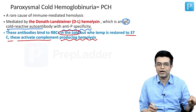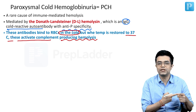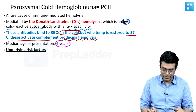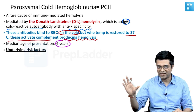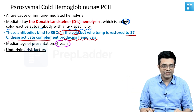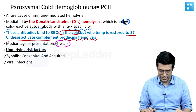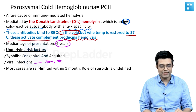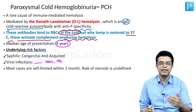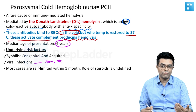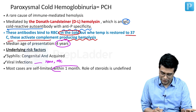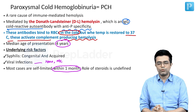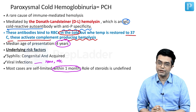The binding to RBCs occurs in the cold environment. Median age of presentation is about four years, with a range of one year to 85 years — that is how wide the range is. Underlying factors include syphilis (both congenital and acquired) and viral infections, which are now considered the most common cause overall. Most cases are self-limited; even if the antibodies have formed, they tend to disappear within one month.